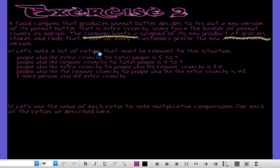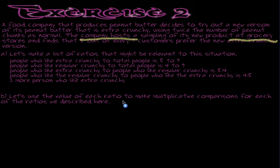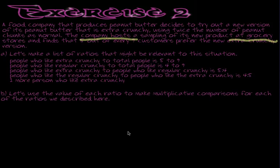Now I'm going to take each ratio and write it as a value — so as a fraction — and by writing it as a fraction, we're placing a value on it. I can use that value and multiplication to find other numbers. That's why we call it the multiplicative comparison: it tells me what I would have to multiply to go from one number to the other. This is useful because there are way more than just 9 people in the grocery store — it's 5 out of the 9 people that were surveyed. So I can use that multiplicative comparison to help find the total number of people that like the extra chunky, and figure out how many containers to make.